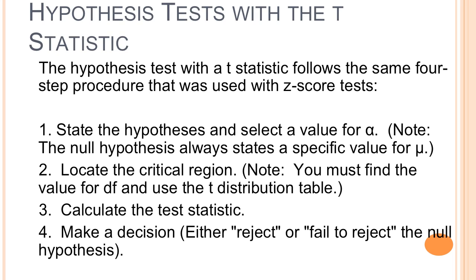Hypothesis testing with the t-statistic follows the same four procedures as with z-score tests. You state the null hypothesis and select a value for alpha — the null hypothesis always states a specific value for the population mean. Locate the critical region using your table: calculate your degrees of freedom and find your critical values for whatever alpha is. Then calculate the actual t-statistic. If your test statistic falls within the critical region, you reject the null hypothesis. If it falls in the main body of the distribution, you fail to reject the null hypothesis.